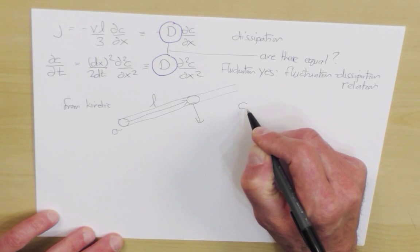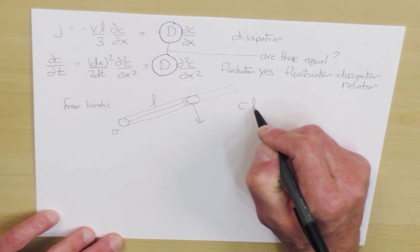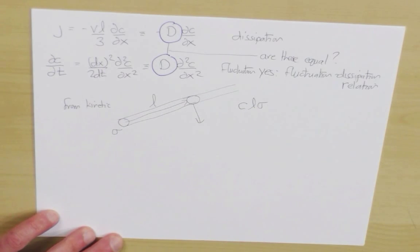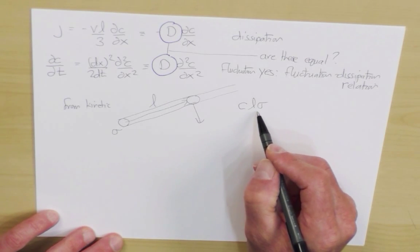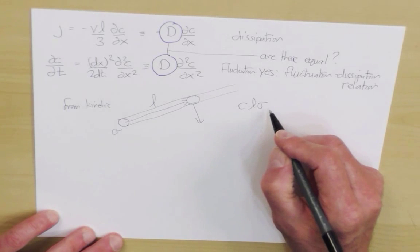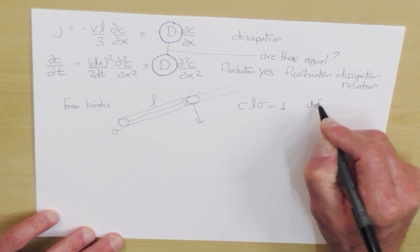So the volume of the collision tube is the length of the tube times the cross-sectional area of the tube. The number of molecules in the tube will then be the volume of the tube times the concentration. When this is of the order of one, that defines the collision.